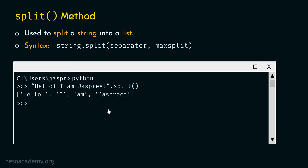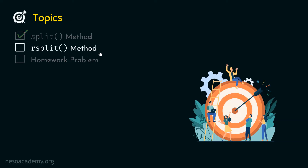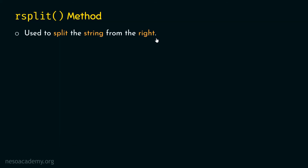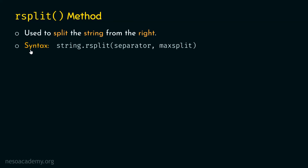Now let's move on to the next method, which is the R-split method. R-split is used to split the string from the right — it will not split from the left, but from the right, which is why it is called R-split, where R stands for right. The syntax of R-split looks similar: it is applied on a string using the dot operator and accepts two arguments — the separator and the max split.